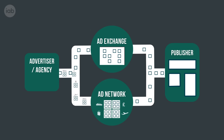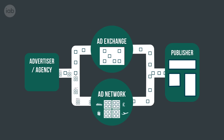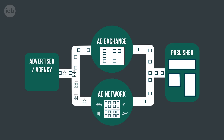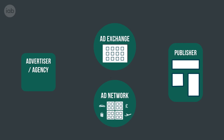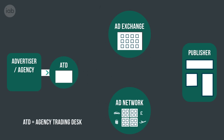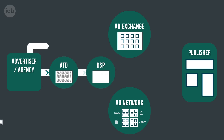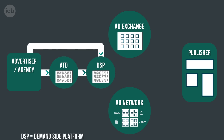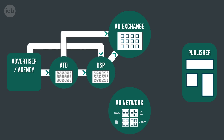Both the buy and sell side saw a massive opportunity to increase efficiency and use technology to help the process of buying and selling. Some agencies created their own proprietary agency trading desk, or invested in demand side platforms, which gave them the ability to trade on the Ad Exchange efficiently and in real time, using data to influence their decision making. That's the buy side.